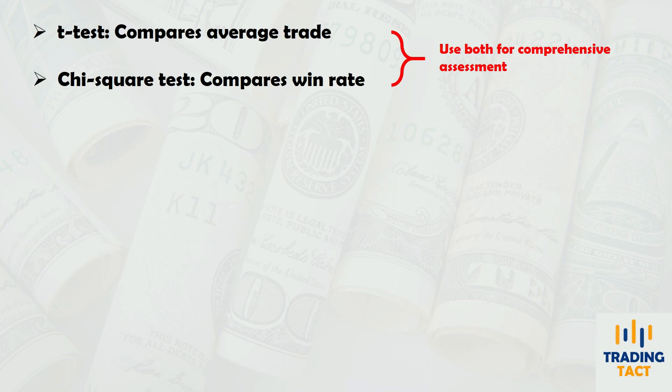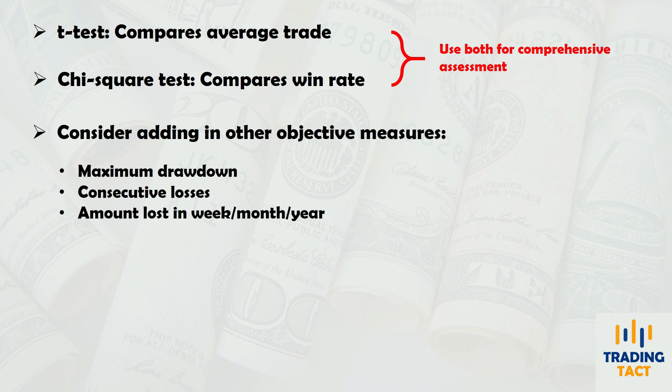Hopefully these simple statistical tests will help you quickly weed out underperformers. Using them together with other objective measures like maximum drawdown and consecutive losses will help you avoid analysis paralysis.